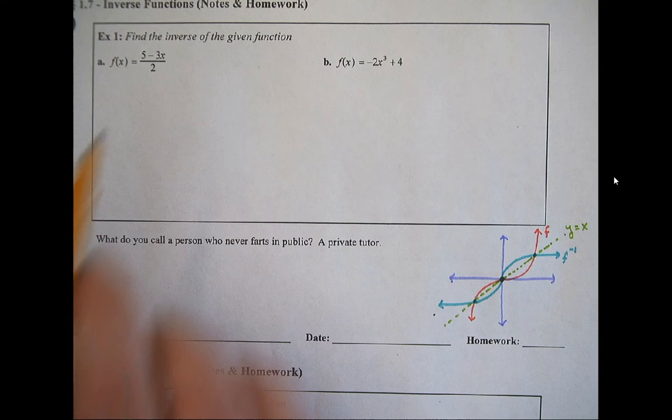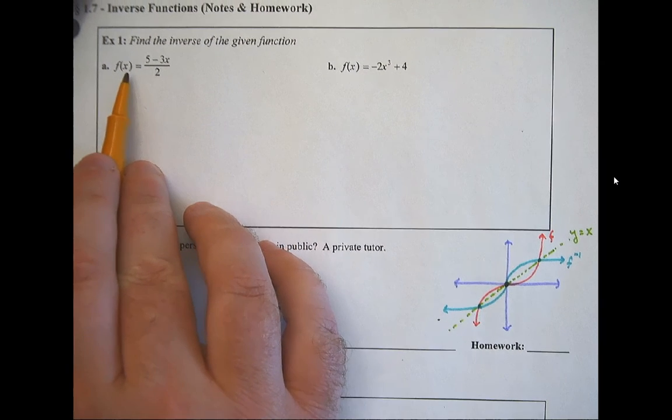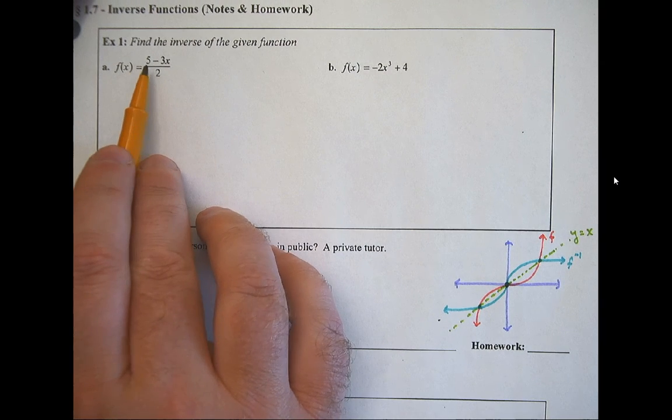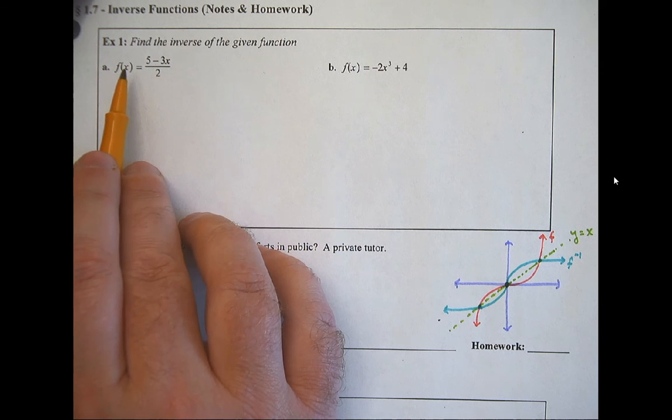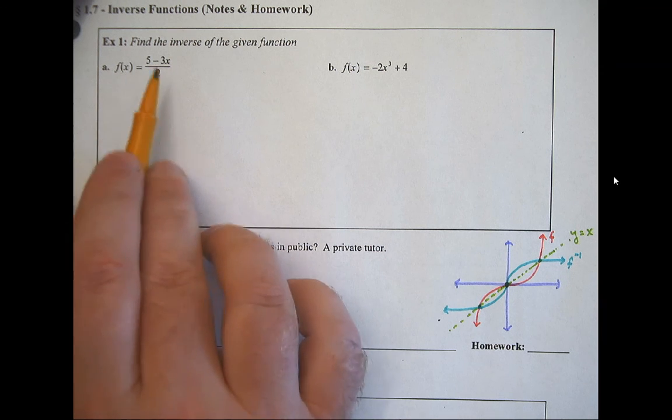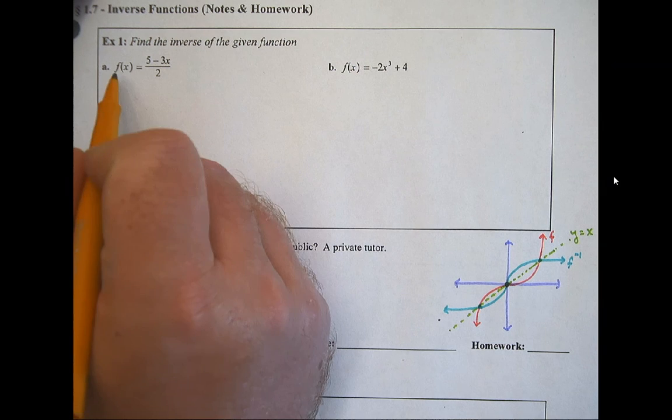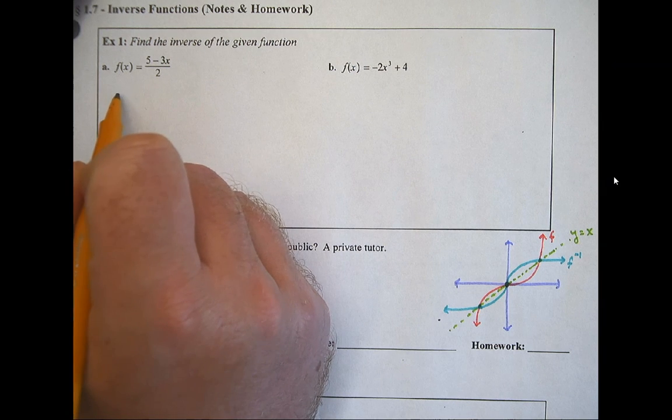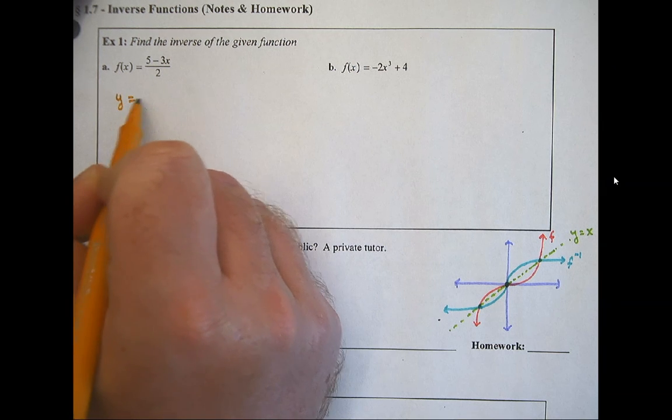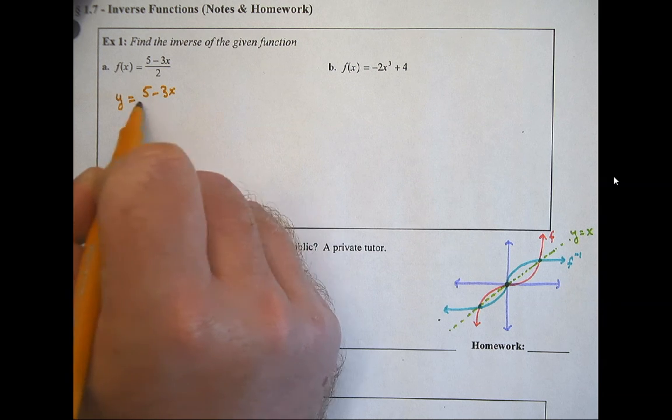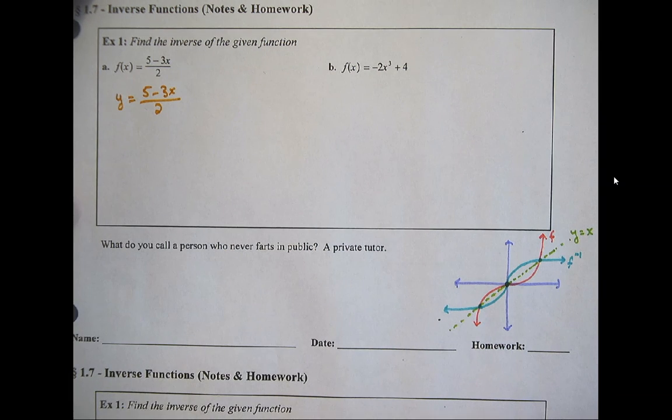But if I want to find the inverse of this function, I need to take the x values and the y values and switch them around. Well, the first thing is we don't have any y values, so we need to remember that f of x really is our y value. So this is still the same function.